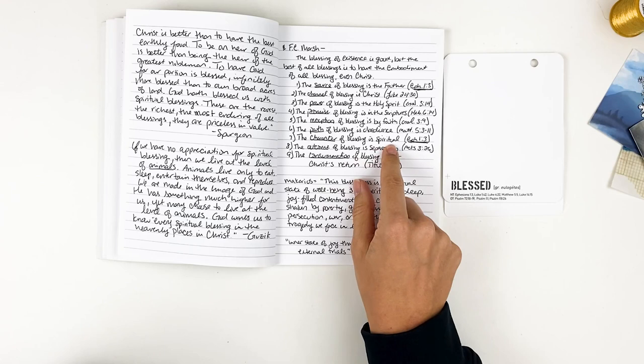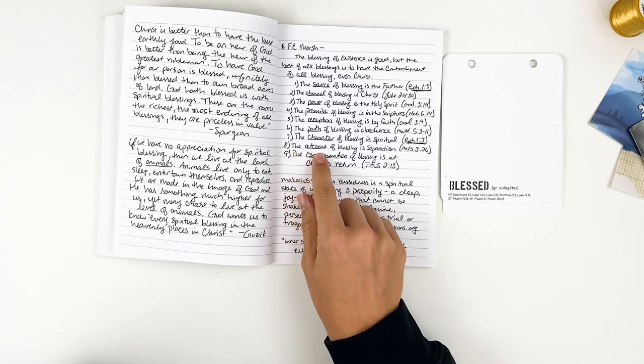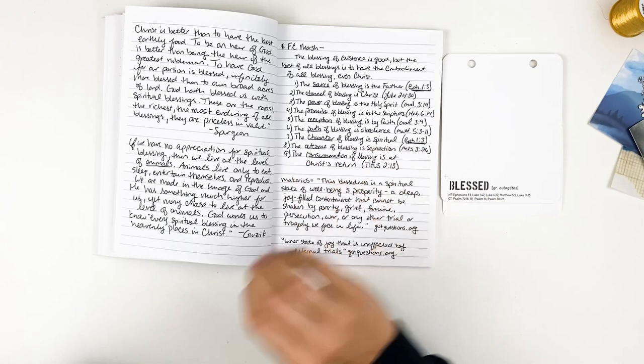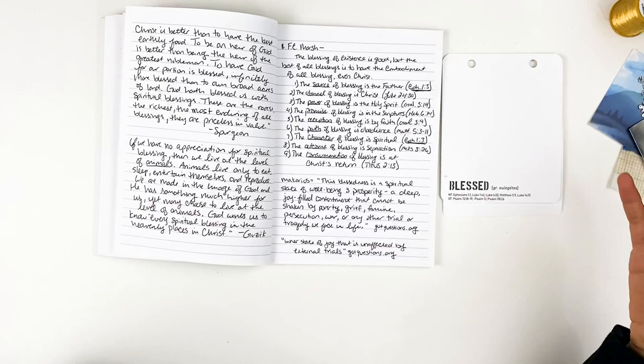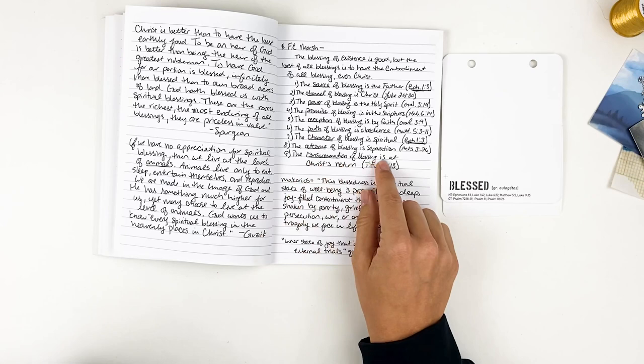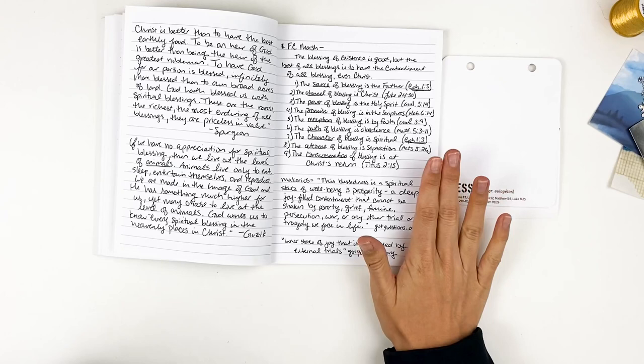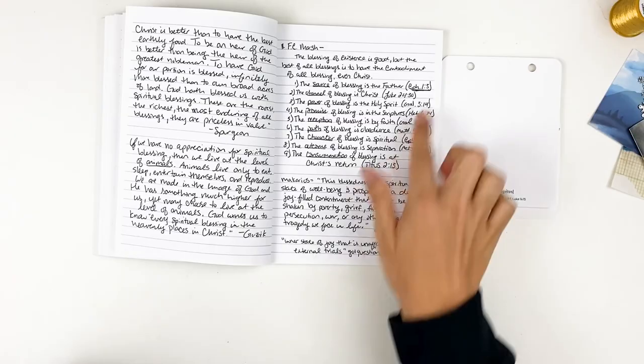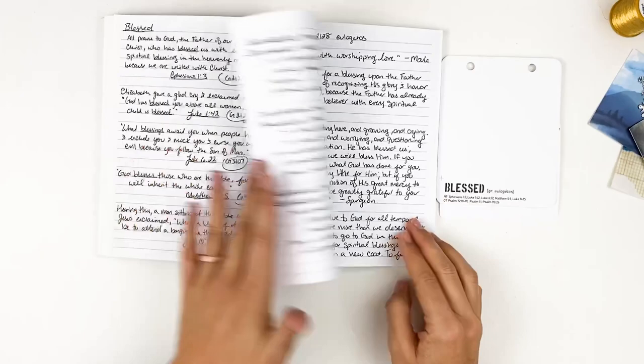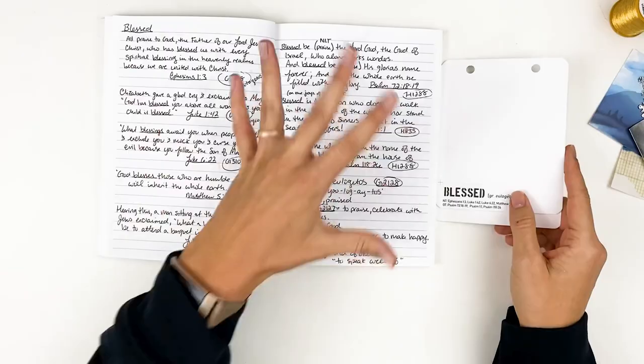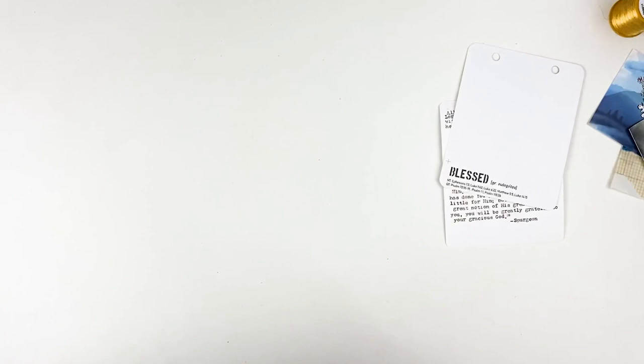We need to obey, not because that's what earns us salvation. That's not how that works. But it's because that's how God wants our life to be. He has laid it out for us. We have a book of—it's a manual, an instruction for our life, and we need to live our life in obedience to Him. The character of blessing is spiritual, according to Ephesians 1:3. The outcome of blessing is separation, Acts 3:26. Now, this one is talking about being separated from the wicked, the unsaved. So it separates us, right? That's part of being a Christian, is being different from others, being different from the world, being set apart. The consummation of blessing is at Christ's return, Titus 2:13. The ultimate blessing is going to be when Christ returns. There's new heavens, new earth. So I just liked how that was laid out.